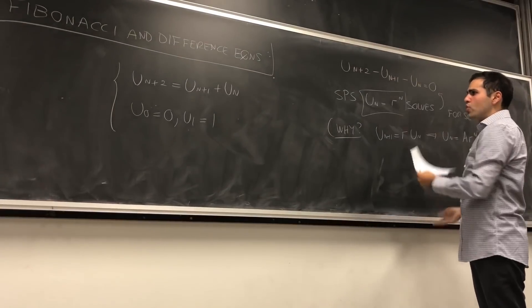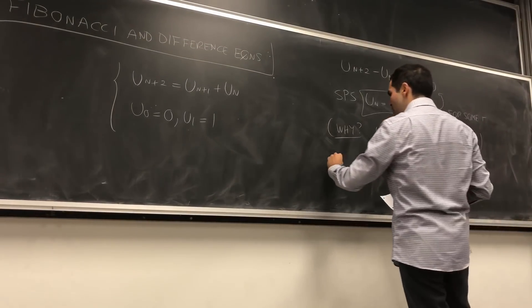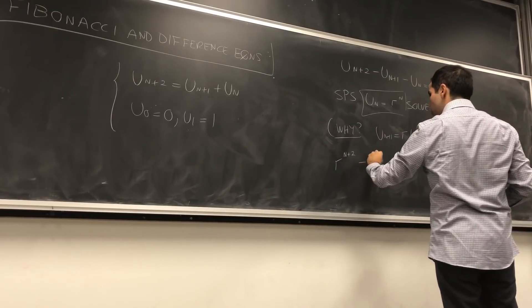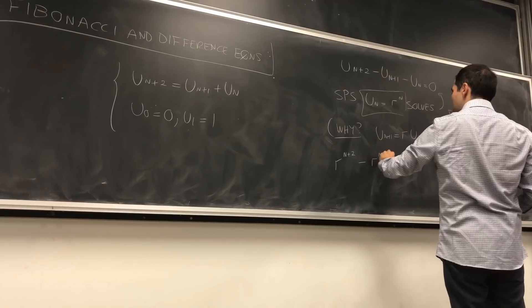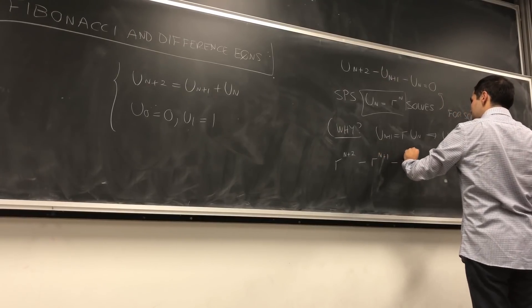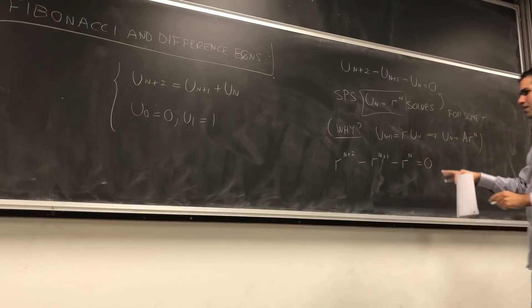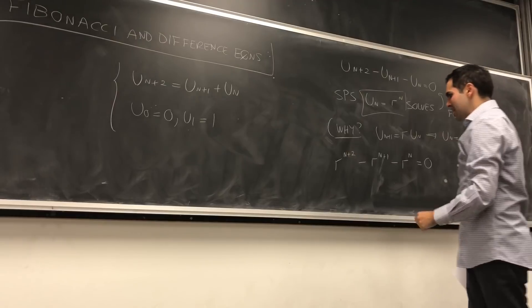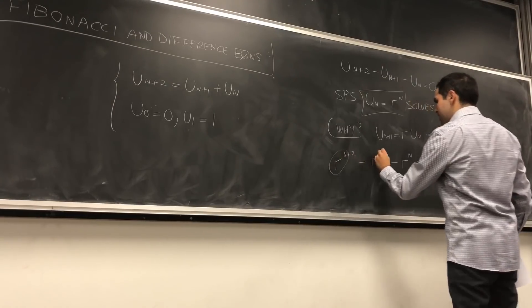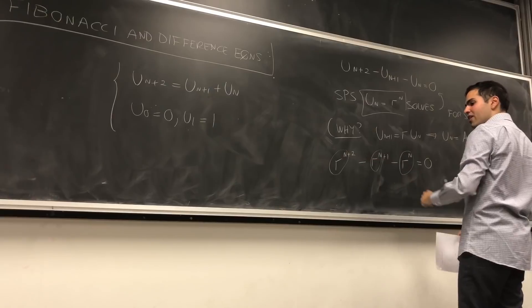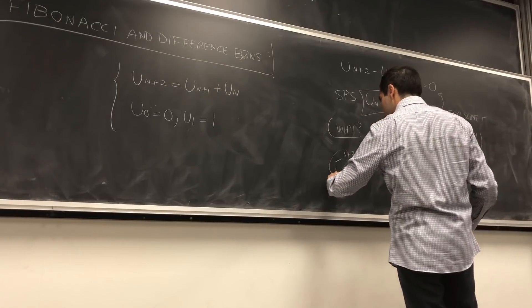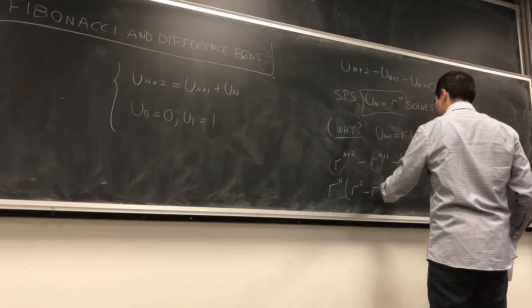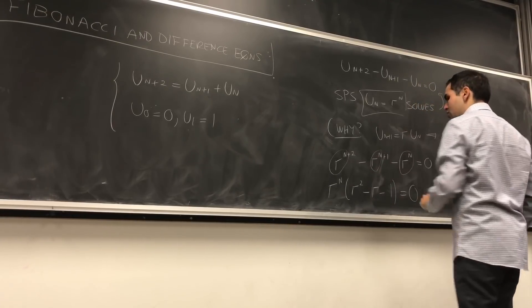If u_n is r to the n, then u_{n+2} is r to the n+2 and u_{n+1} is r to the n+1. We get a complicated equation, but notice every term has a common factor of r to the n, so we get: r to the n times (r squared minus r minus 1) equals 0.